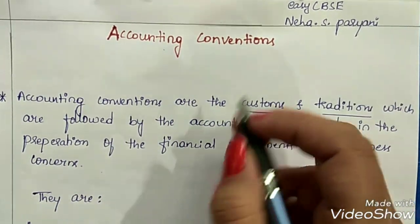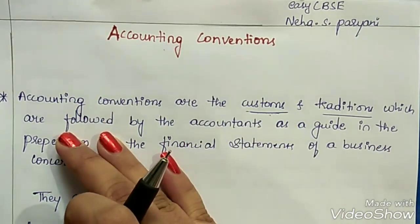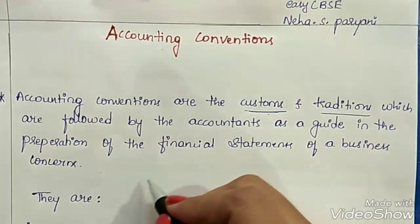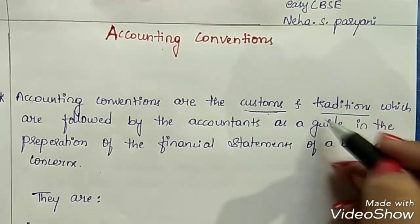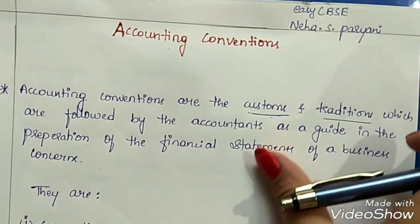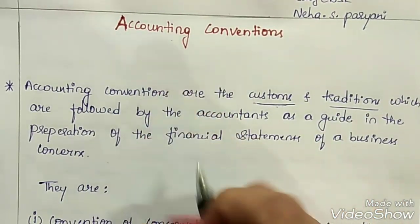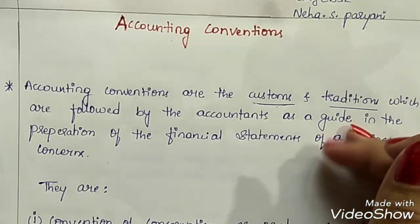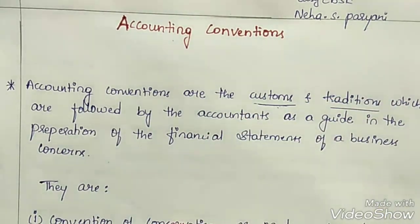We know the meaning of accounting concepts — they are the assumptions that are made while preparing the financial statements. In the same way, accounting conventions are the customs and traditions. They are like rules which need to be followed by accountants, and they serve as a guide. They help in preparation of financial statements.